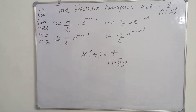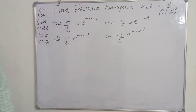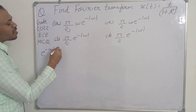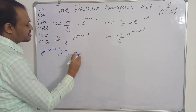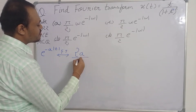Here t denotes the time domain and omega denotes the frequency domain. We have to use the properties of Fourier transform to find this value. We are given e^(-|ω|) and we have the formula for e^(-a|t|): its Fourier transform is 2a / (a² + ω²).